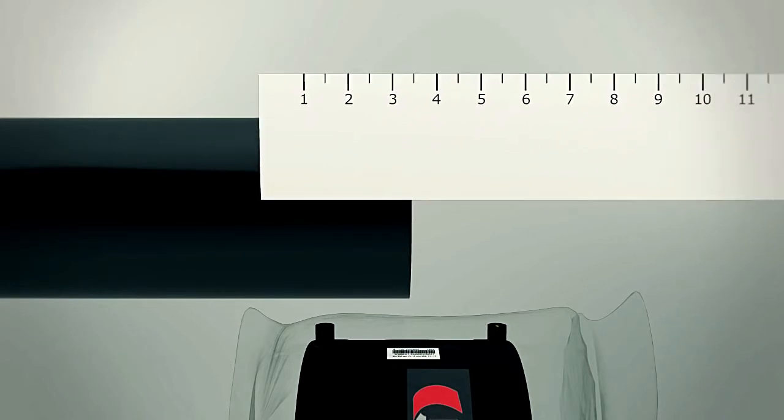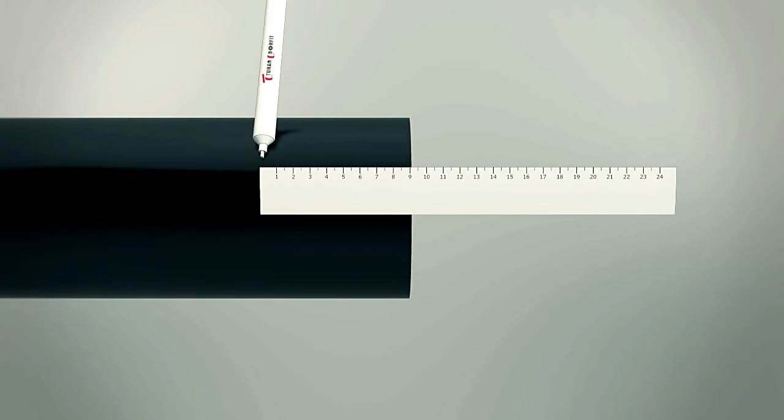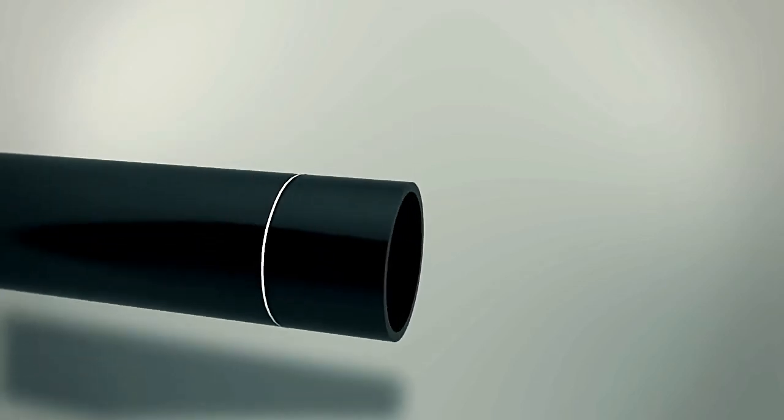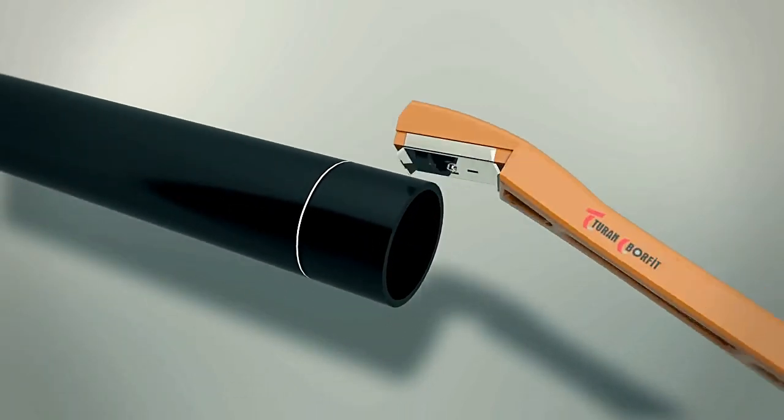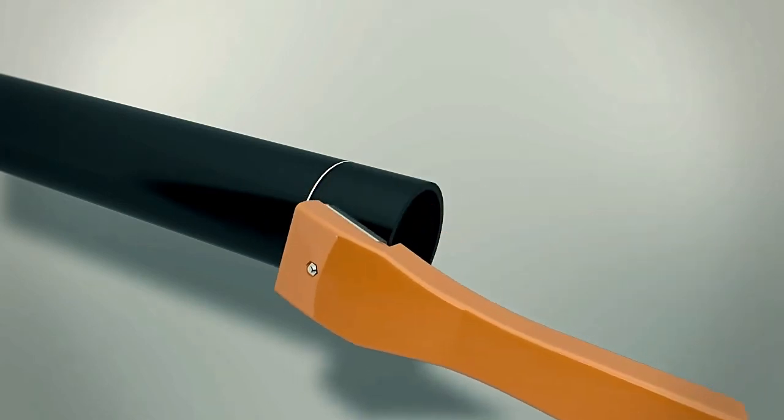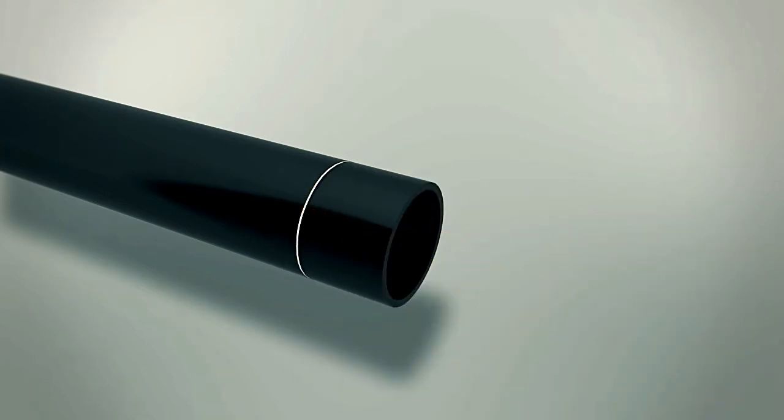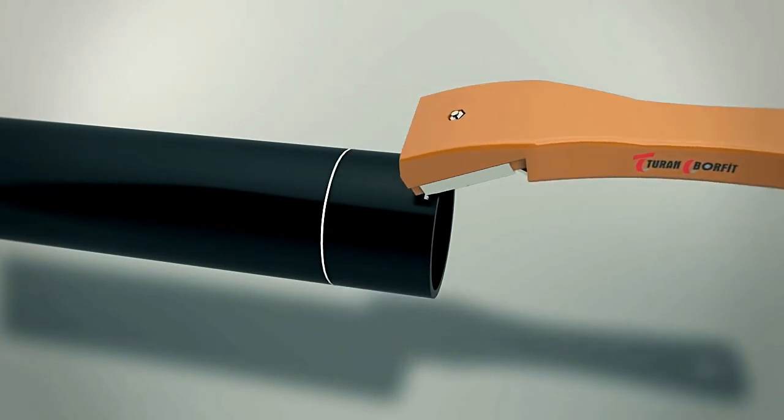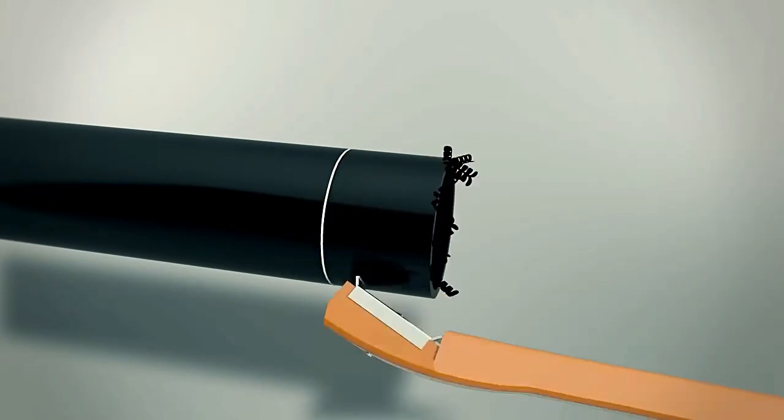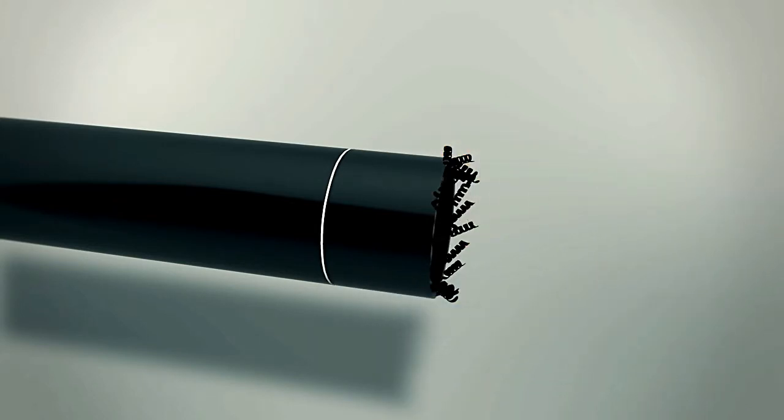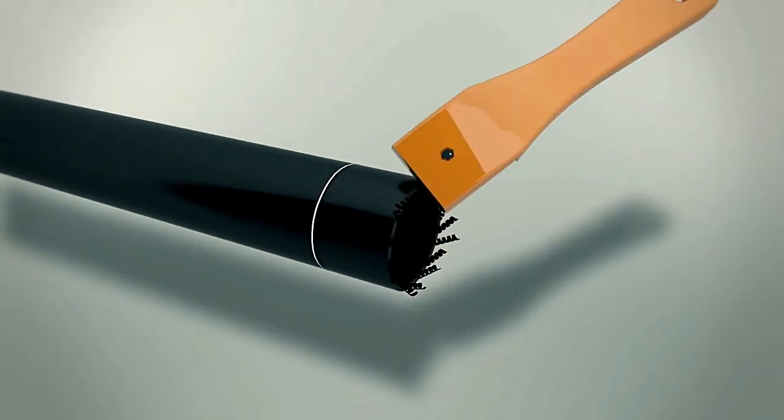When using the hand scraper, mark the pipe as shown here. Good scraping will make those marks disappear. When you're done, chamfer the end for easy pipe insertion and make sure to remove all the scrapings.